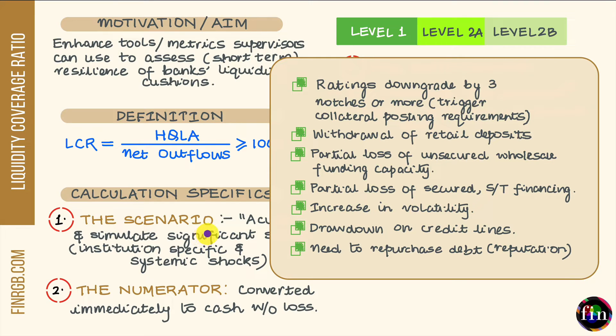In this scenario, we're talking about a drawdown on credit lines which the bank has extended to its preferred customers, and also the need to actually repurchase debt which has been issued by special purpose vehicles (SPVs) and special investment vehicles (SIVs) of our bank. This repurchasing of debt happens for the purpose of safeguarding the bank's reputation. Connect this with reputation risk. This is how this scenario looks.